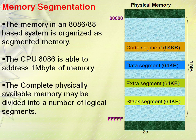Why 64 kilobytes? Because we have 16-bit registers for accessing the memory. With 16-bit registers we can only access up to 64 kilobytes. So that is why each and every segment size is 64 kilobytes. The complete 1 MB memory is divided into 16 logical segments, because 64 kilobytes times 16 equals 1 MB.